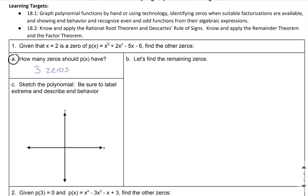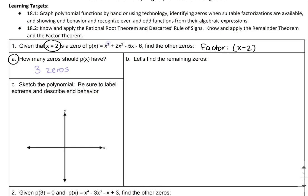Now I'm going to find the remaining zeros given this zero and this polynomial. I'm going to take the zero x=2 and find what factor corresponds to it. I know that a factor of this polynomial would be x minus 2, because if I have an x-intercept at (2, 0), the factor from that x-intercept is x minus 2. I'm going to take my polynomial, x cubed plus 2x squared minus 5x minus 6, and divide by x minus 2 to find my other factors.